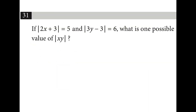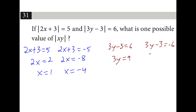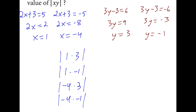I can solve both of these equations for their positive and negative solutions. On the left, I'm going to subtract 3 from both sides and then divide by 2. On the right, I'm going to add 3 to both sides and divide by 3. If you plug in the different values for x and y into the absolute value brackets, it's possible to get an answer of 3, an answer of 1, an answer of 12, or an answer of 4. Any of these is correct.